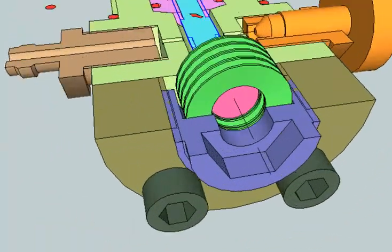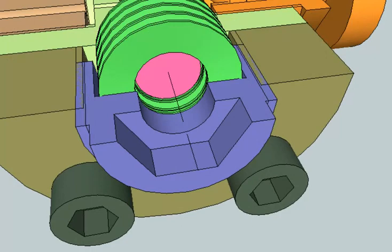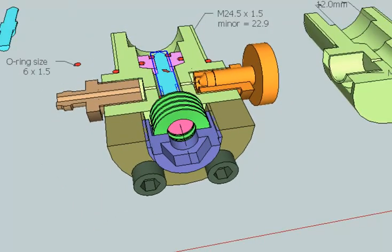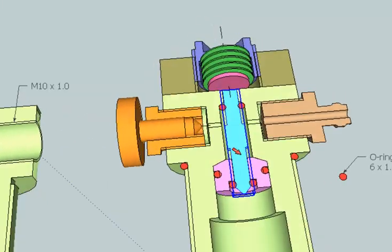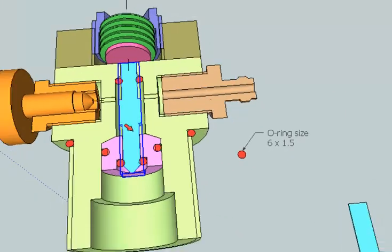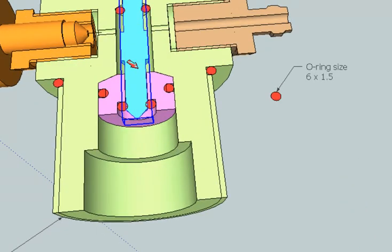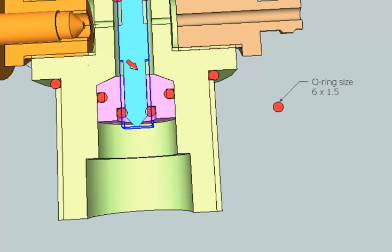So I have an adjusting screw over here. I can adjust that to whatever pressure I need to operate. Once the preset pressure is reached, the valve will release.